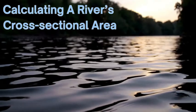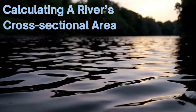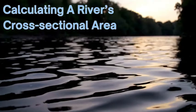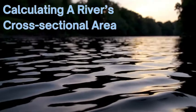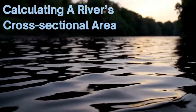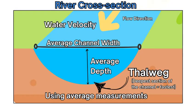The next step for discharge is to calculate a river's cross-sectional area. The river's cross-sectional area is calculated by multiplying the width by the depth.